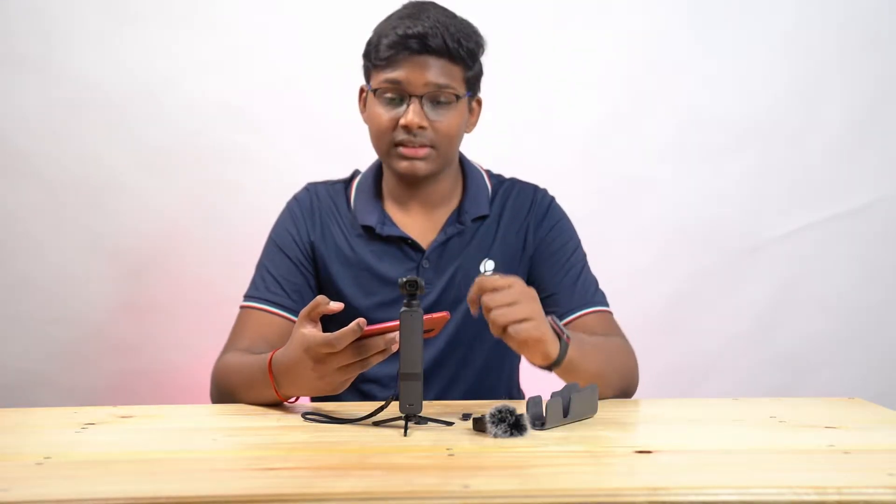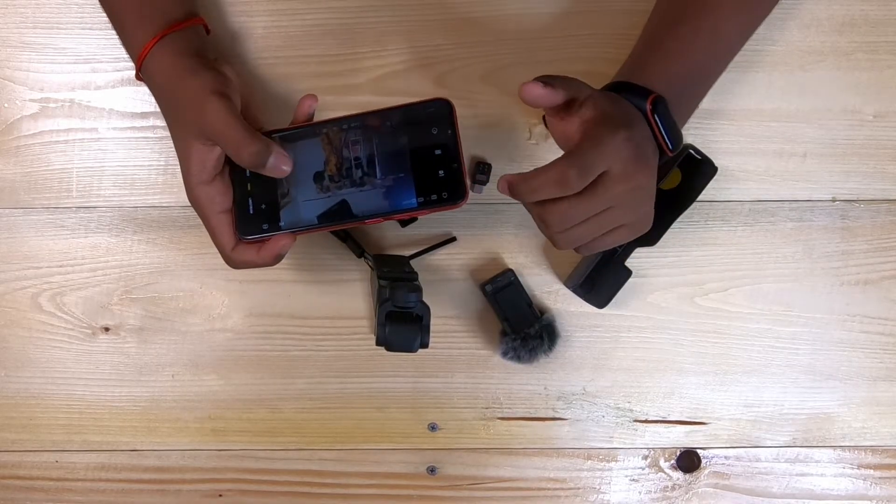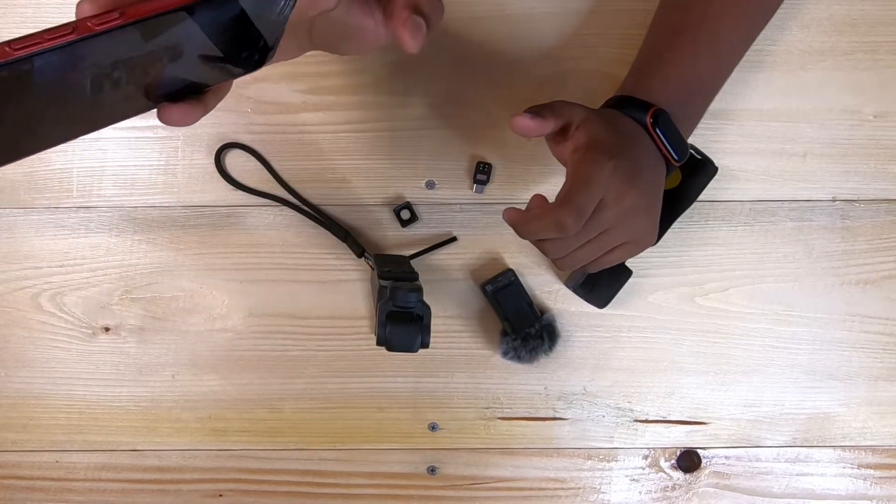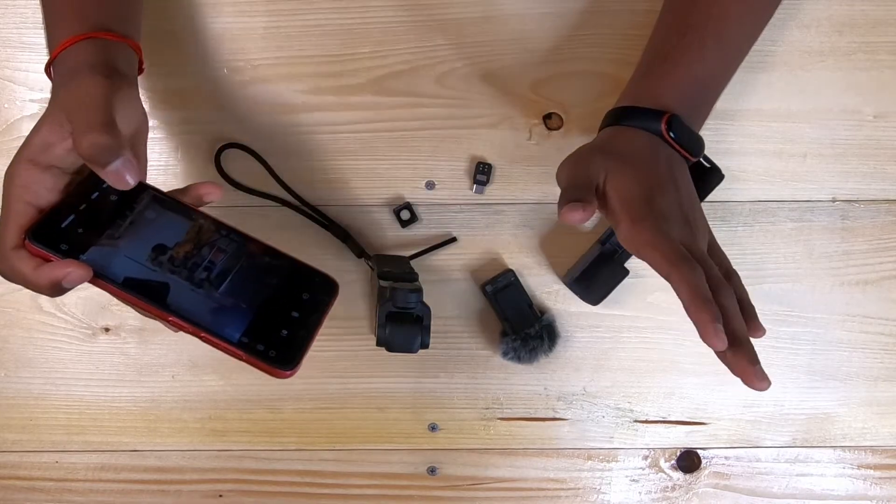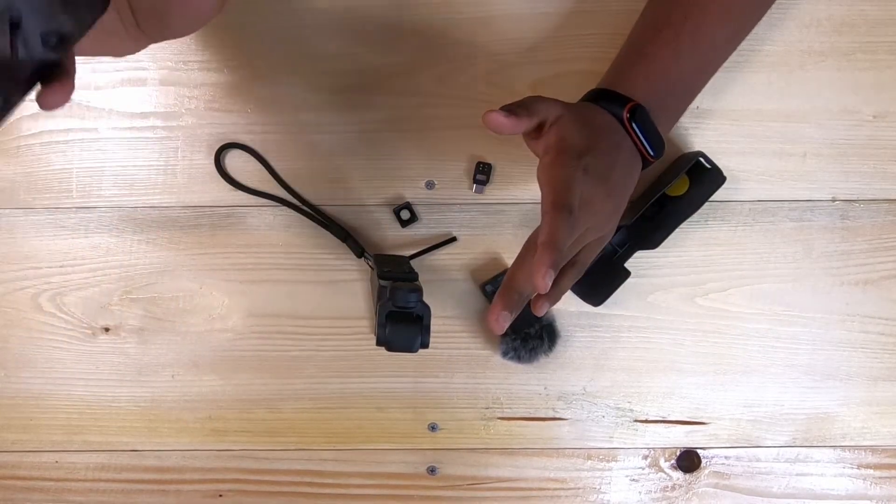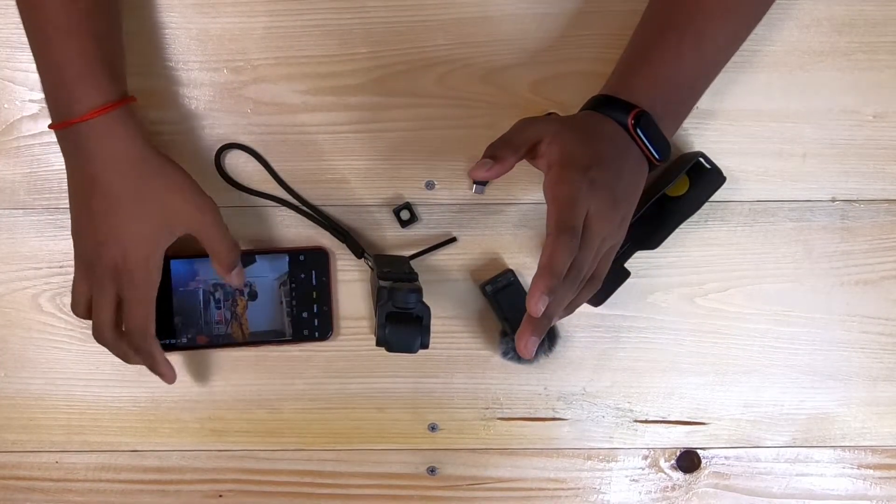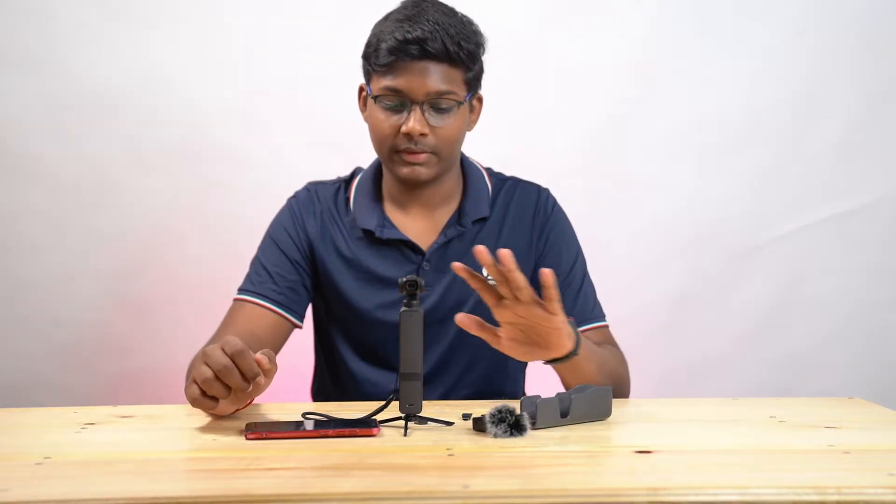As the screen in the DJI Pocket 2 is very small, you can use the device as a screen. Now you have all control over the pocket with this. So now, it's very easy to set it up. We got it all connected. So now, let's talk about the pocket.